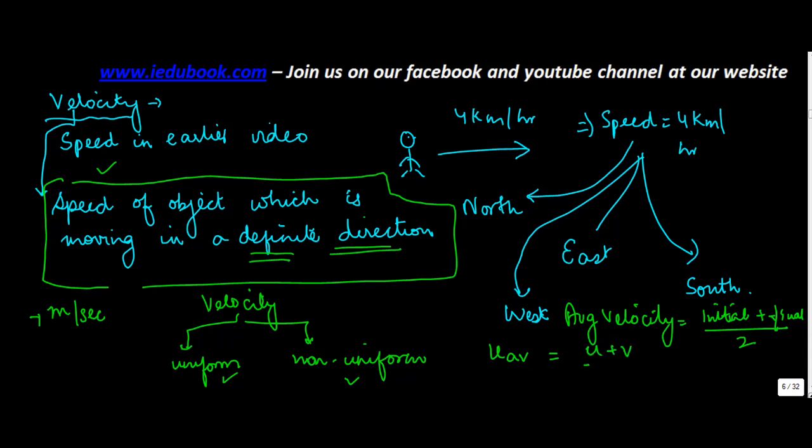Where u is the initial velocity, v is the final velocity, 2 of course is the mathematical number. However, please note that this formula on the average velocity is applicable only and only when the velocity is changing at a uniform rate.